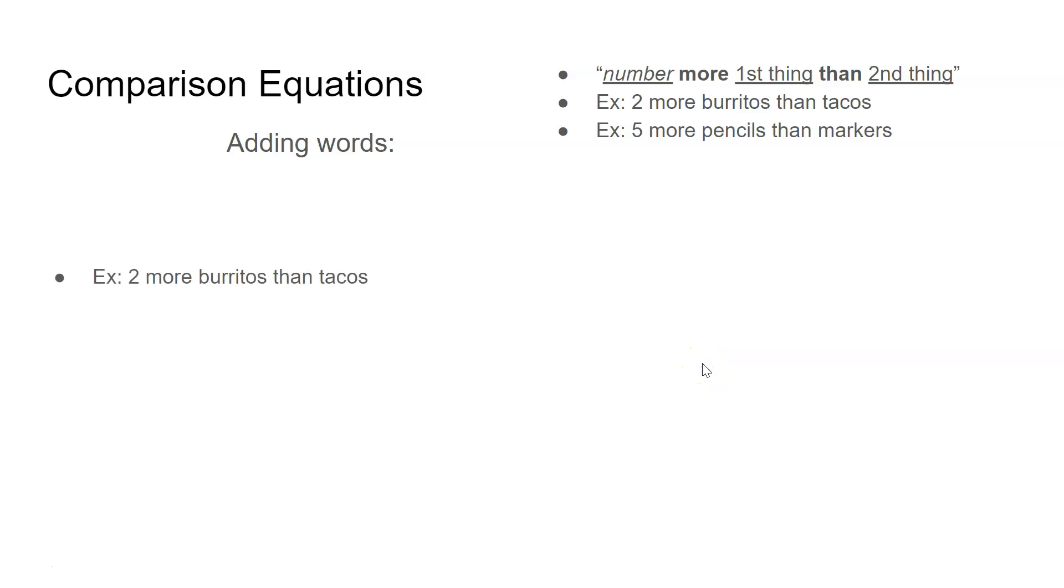Let's write equations for these examples. For example, two more burritos than tacos. There's my metaphor circles. If I have more burritos, burritos is bigger. So I put burritos on the bigger circle and tacos on the smaller circle. Now I'm asking myself, how would tacos need to grow in order to be equal to burritos?